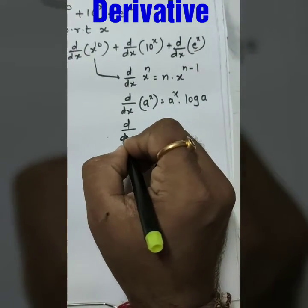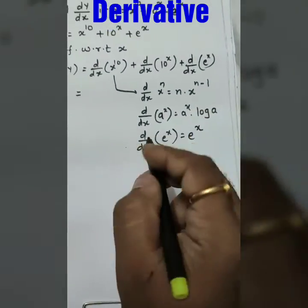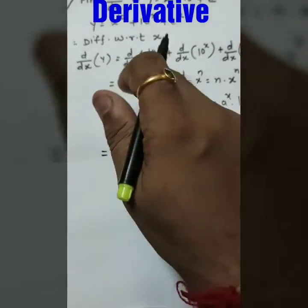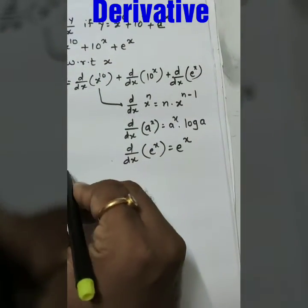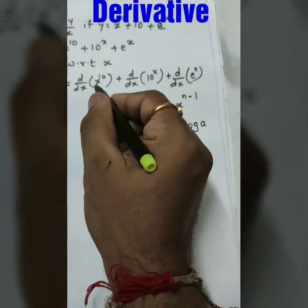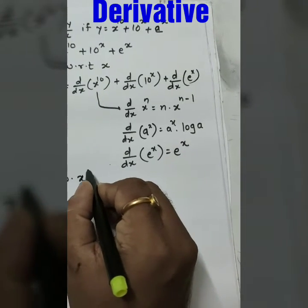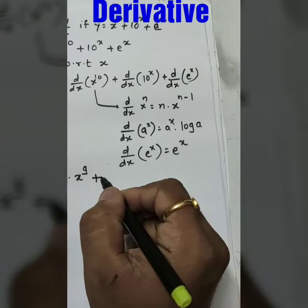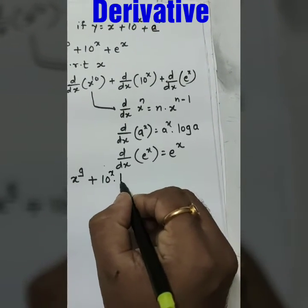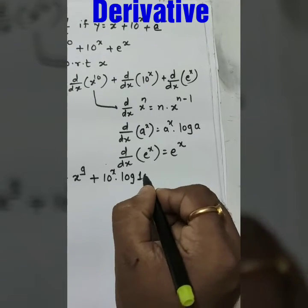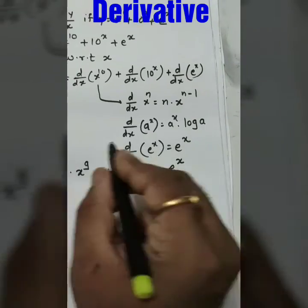Similarly, d by dx of e raise to x is e raise to x. So taking the derivative of all three — x raise to 10, 10 raise to x, and e raise to x — the result is 10 x raise to 9 plus 10 raise to x log 10 plus e raise to x.